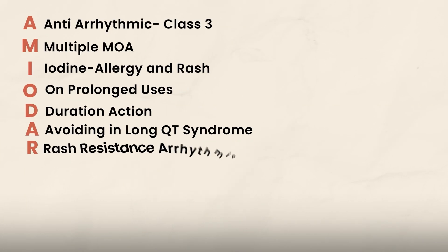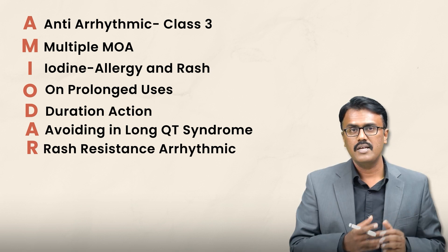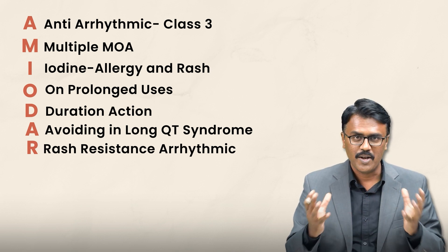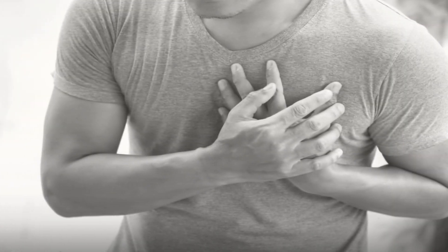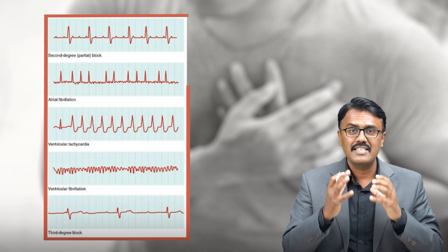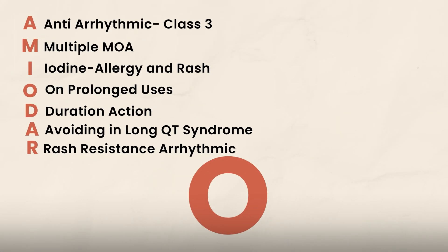R stands for rash — the reason is the presence of iodine. Amiodarone is also used for resistant arrhythmias because it has multiple mechanisms of action.